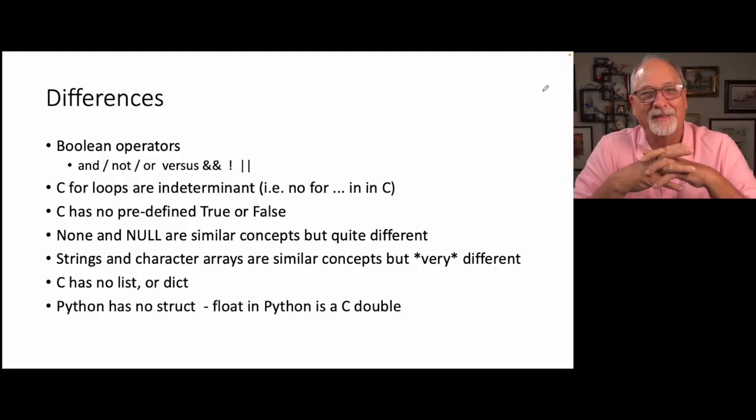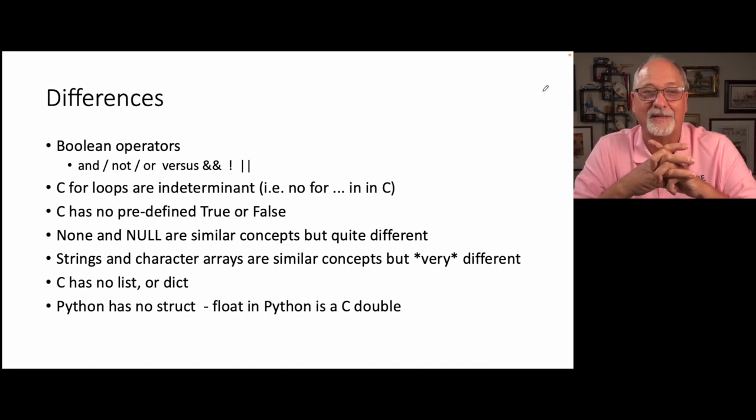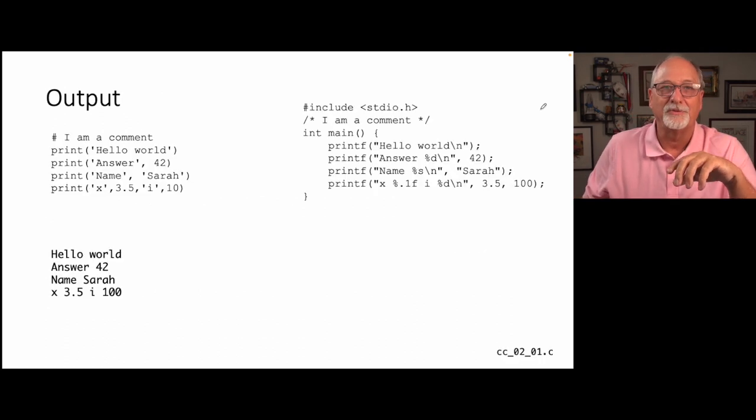Strings and character arrays — for a while, you can kind of pretend that character arrays in C are mostly like strings. When you throw a constant and pass it to a function, they kind of look the same. But once you start working with them, you'll see they're very, very different. That's the first fun part of this class: strings are now your responsibility. C has no list or dictionary, and Python has no concept of tightly packed data, which is what structs are.